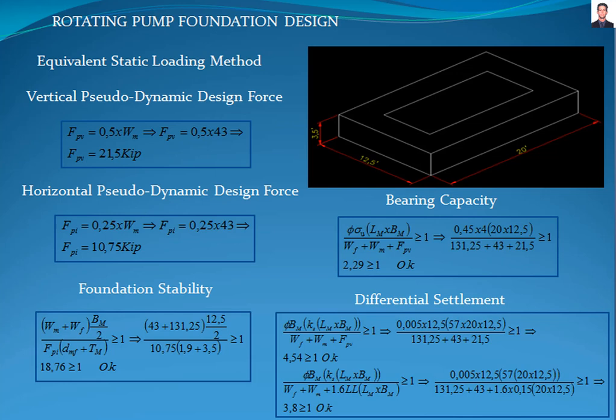The last verification is the settlement in the operating state condition and maintenance state condition, with this equation, where Fpi is the reduction factor in accordance with Table 12.13-3 of the ASCE standard, to take into consideration the liquefaction effect that could be caused by the vibration of the machine. KS is the soil modulus of subgrade reaction, and LL is the live loads in accordance with the ASCE standard, to take into consideration the loads during the maintenance operations. In both cases, the verification passed.